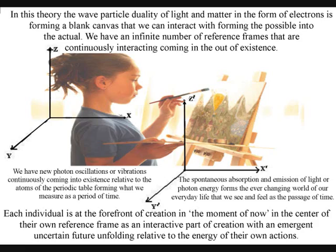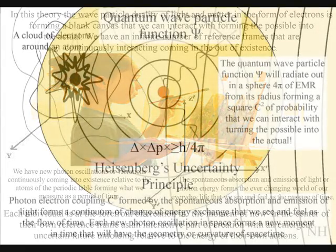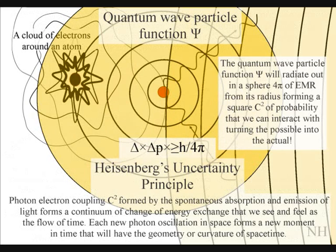In this theory, the wave-particle duality of light and matter in the form of electrons is forming a blank canvas that we can interact with, forming the possible into the actual.